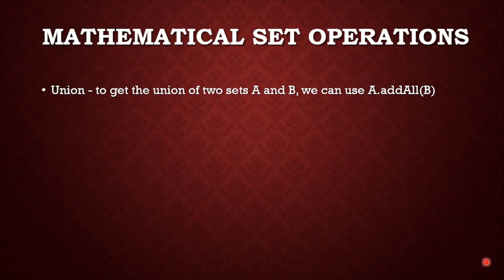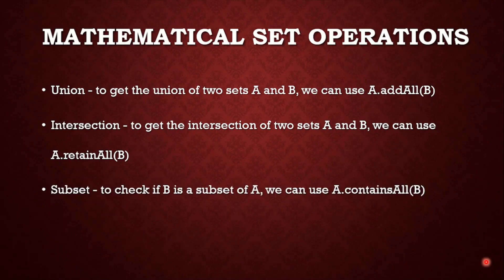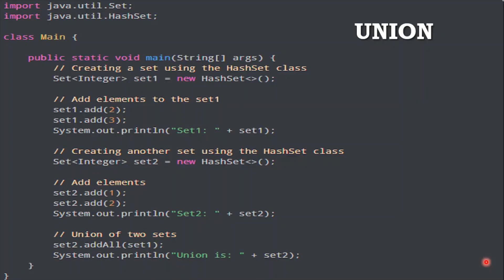Using the available methods we can achieve mathematical set operations like union, intersection, and subset. To get the union of set A and B, we use A.addAll(B). For intersection, we use A.retainAll(B), which returns only the common elements. To check if B is a subset of A, we use A.containsAll(B), which returns true if B is a subset of A and false otherwise.